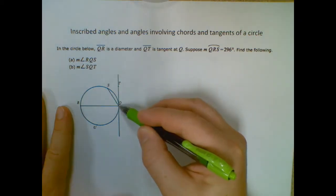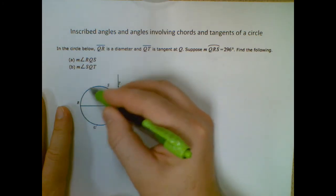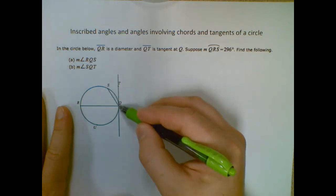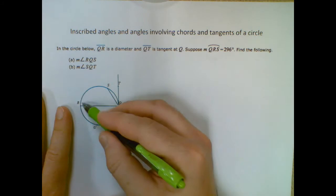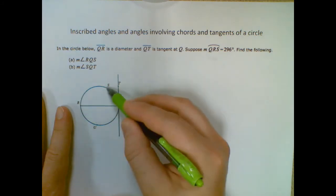So we know QRS is a major arc. It goes all the way around here. It's 296. So how do I just find this guy? Because that's really what I want.